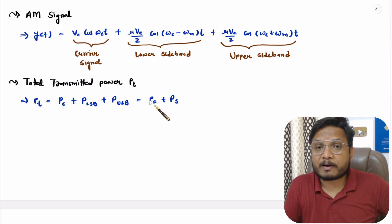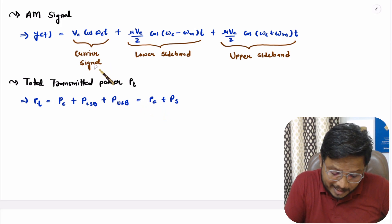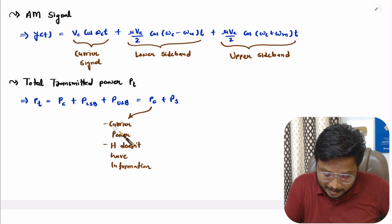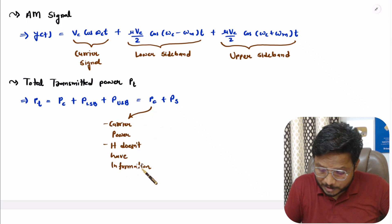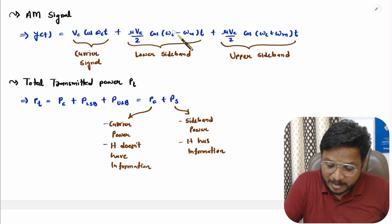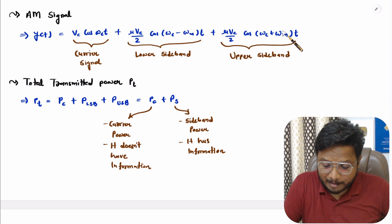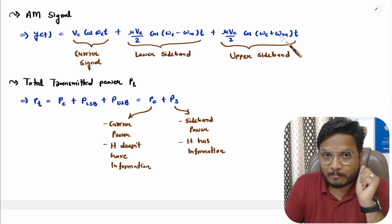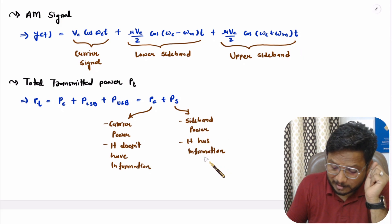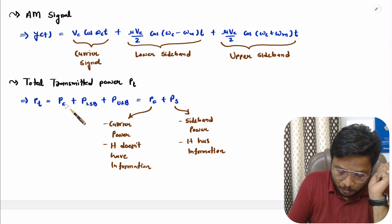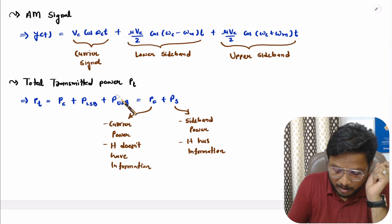The carrier signal power PC does not carry any information — it has frequency ωC only, with no message content. All information is contained in the sideband power: the upper sideband and lower sideband both have the frequency component ωM, which is the frequency of the message signal. So sideband power carries the information of the message signal. Now I will calculate PC, PLSB, and PUSB.